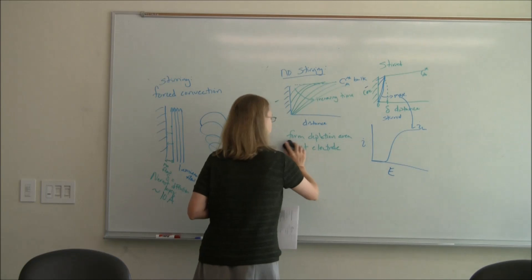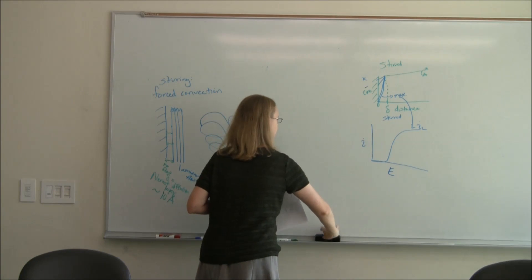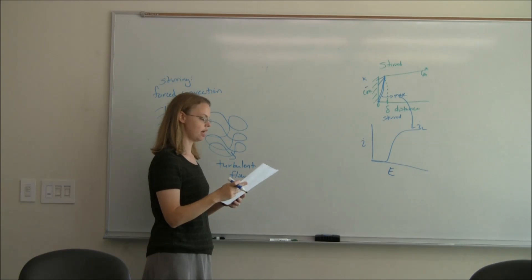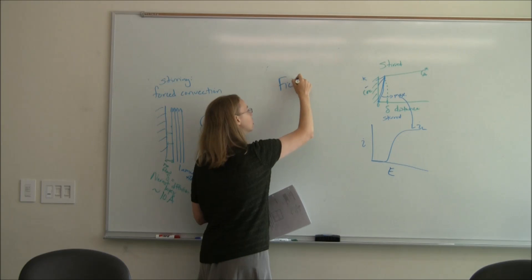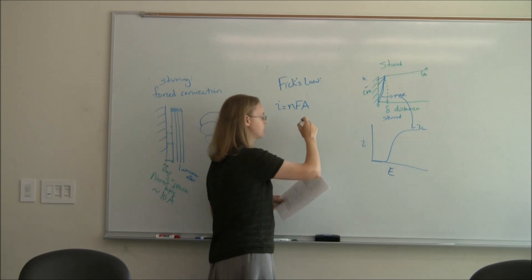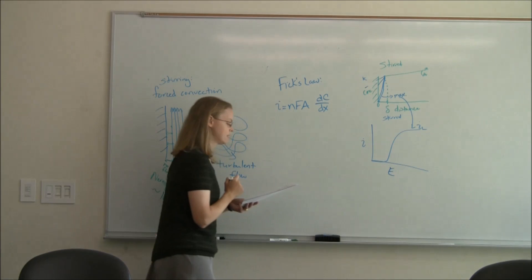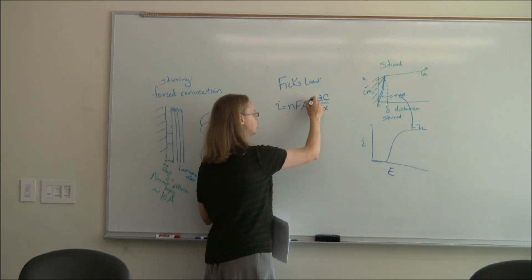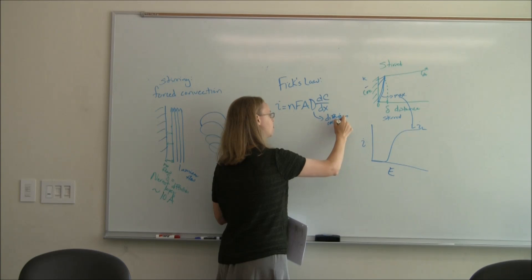Now we should be able to write some equations, then, for what this looks like. And so it turns out, from Fick's Law governing diffusion, that I is equal to N, F, A, D, I forgot a term, times the change in concentration with respect to distance. D is the diffusion coefficient. So there has to be a term in there for how fast a molecule can diffuse. So that's the diffusion coefficient.